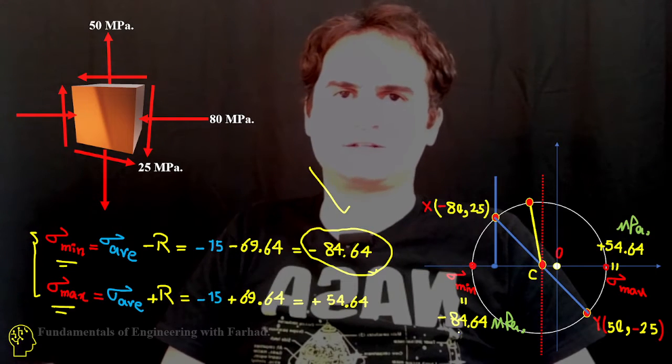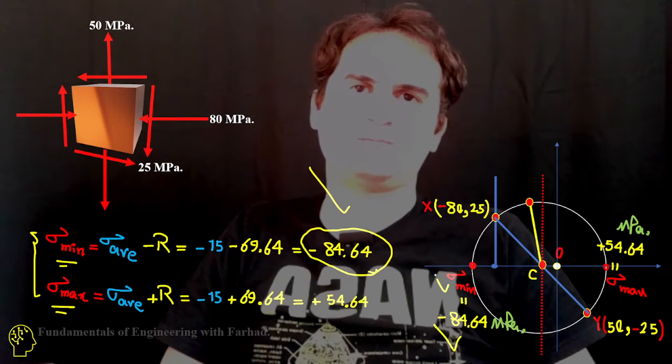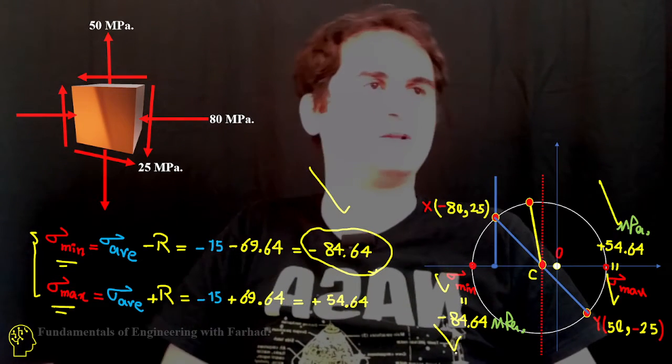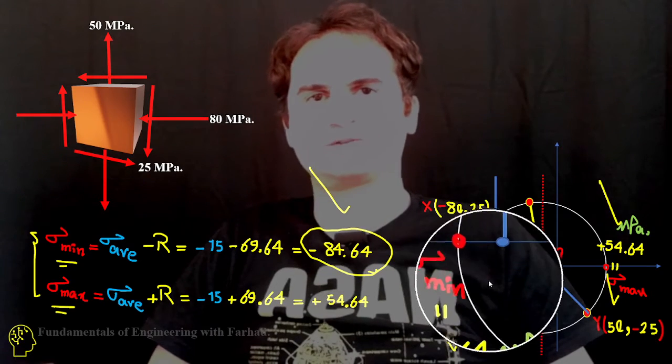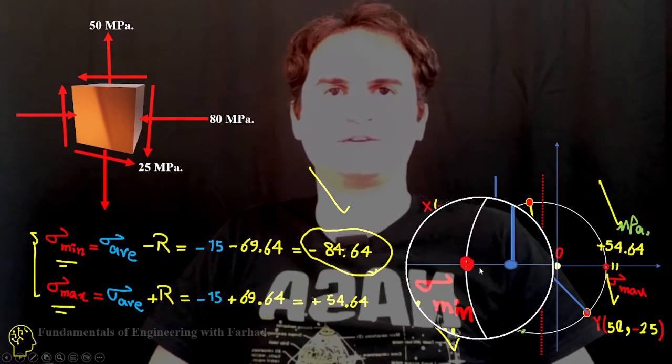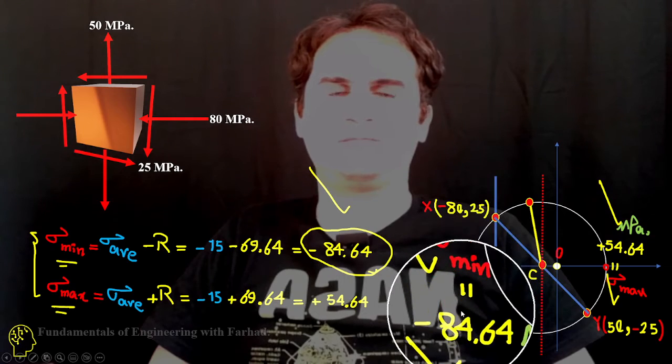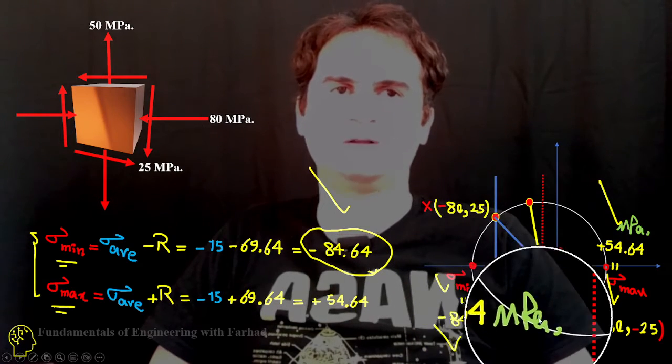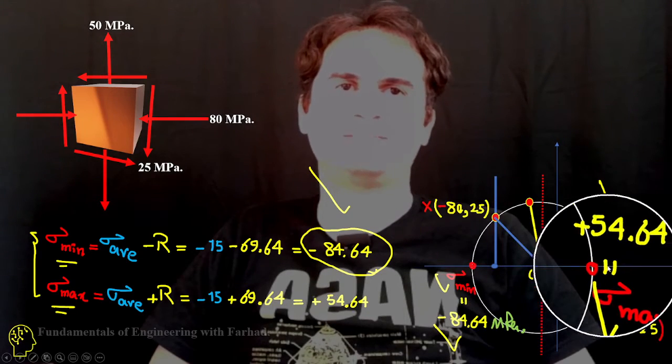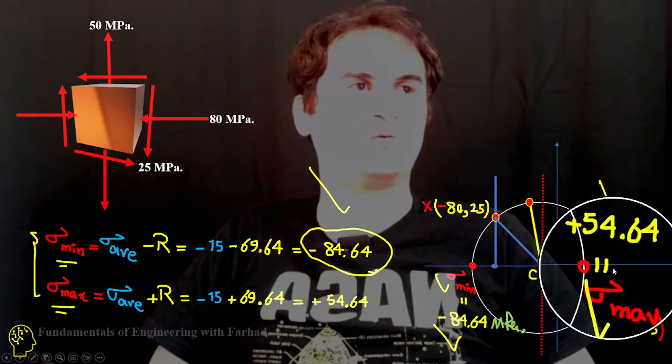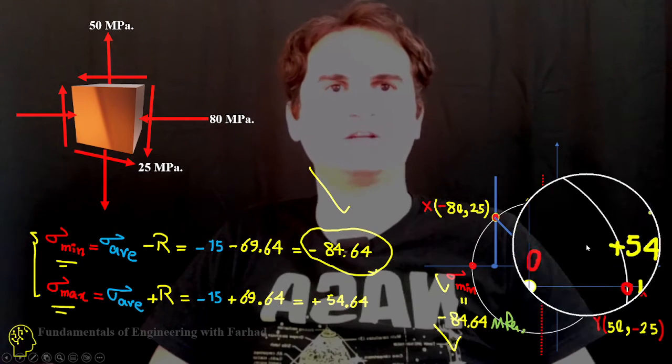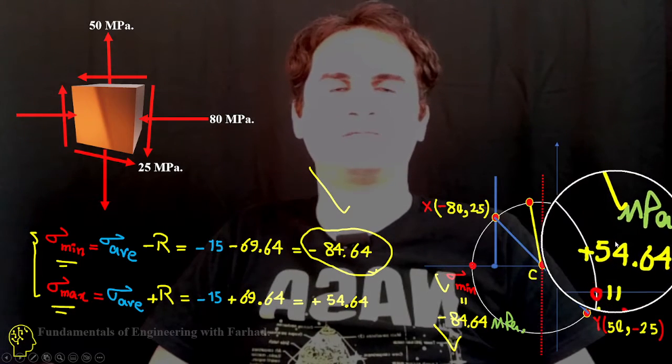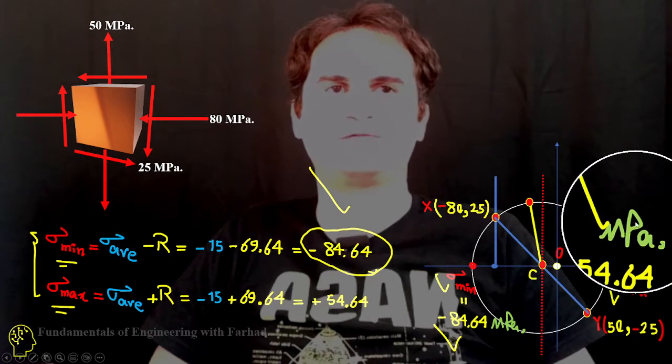It gives us the numeric value of sigma minimum and sigma maximum in megapascals. So the sigma minimum is negative 84.64 megapascals. Sigma maximum is the maximum possible in terms of normal stress, considering the direction, that's positive 54.64 megapascals.